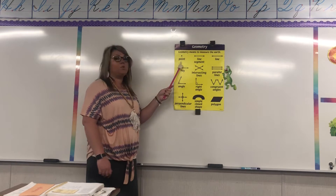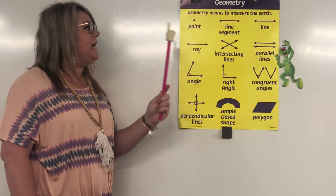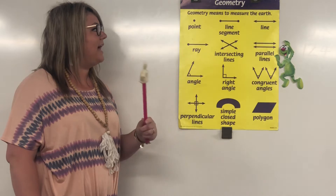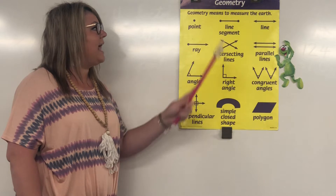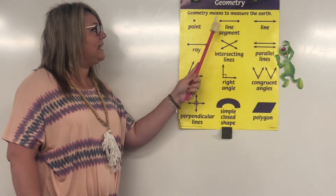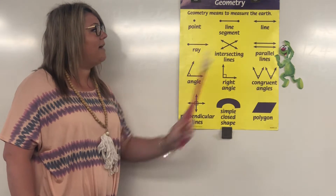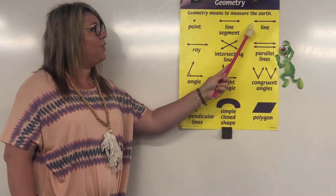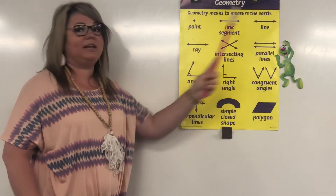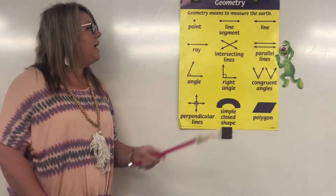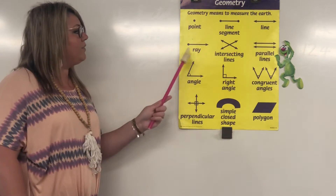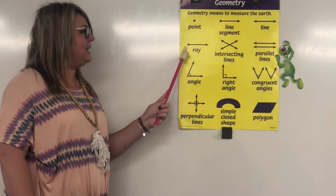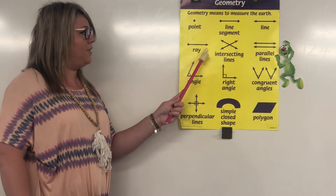Now this is a point — you guys should know what that means — and then we have a line segment that has a beginning and an end, and then we have a line that has no beginning and no end. It just keeps going on forever, and then you have a ray which has a beginning and no end.